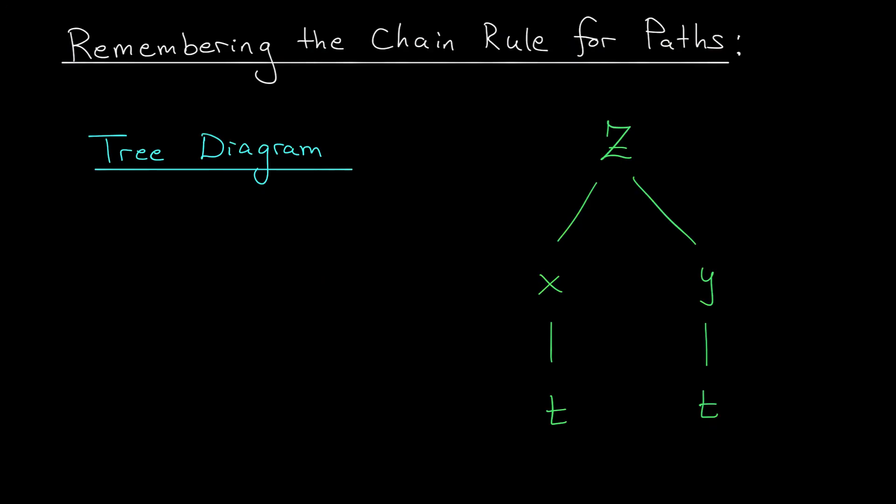If you're looking for a nice compact way to remember the chain rule for paths, consider one of these tree diagrams. We put the big function z at the top. z depends on x and y, the intermediate variables, so they're at the next level, but each of x and y depends on some parameter t, which is found at the bottom.